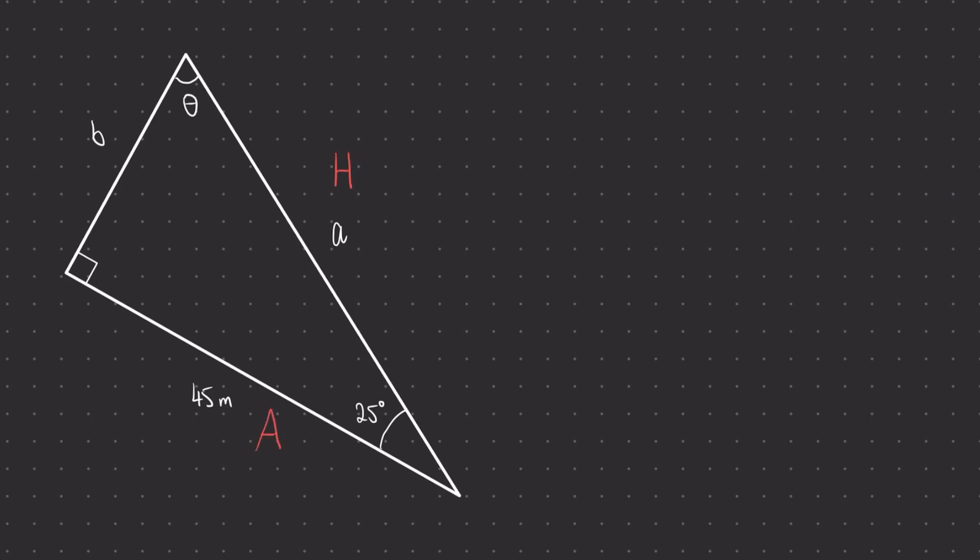The formula that links together those two equations is cosine, so cos of theta is going to be my adjacent over my hypotenuse. Let's replace those unknown variables. We're going to have cosine of 25 degrees is equal to 45 divided by a, little a in this case.